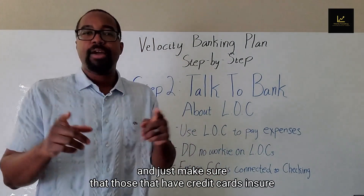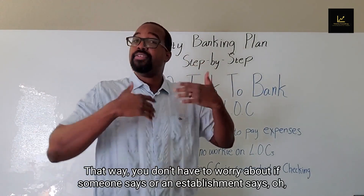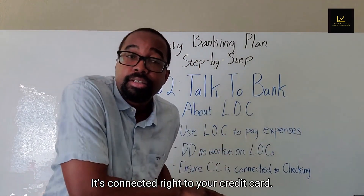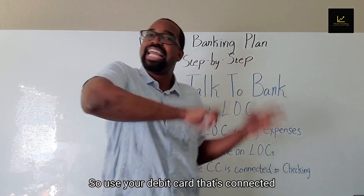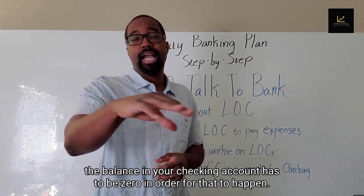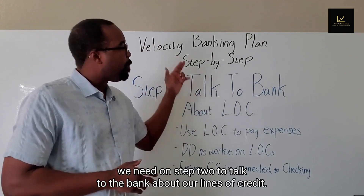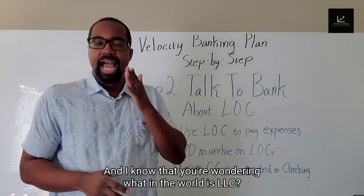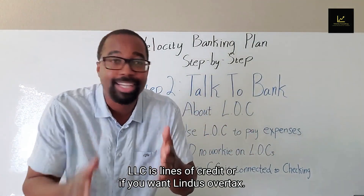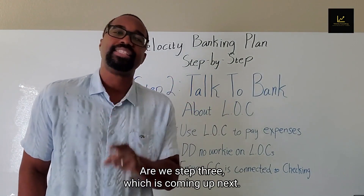Make sure your credit card is connected to your checking account. That way, if an establishment doesn't take credit cards, you can use your debit card — it's connected to your credit card and will still utilize it. The balance in your checking account has to be zero for that to happen. In step two, talk to the bank about your lines of credit — LOC stands for lines of credit, or if you prefer, lenders over cash.